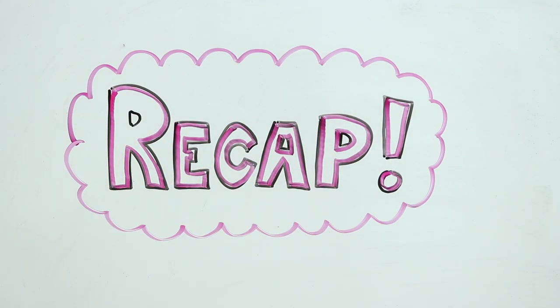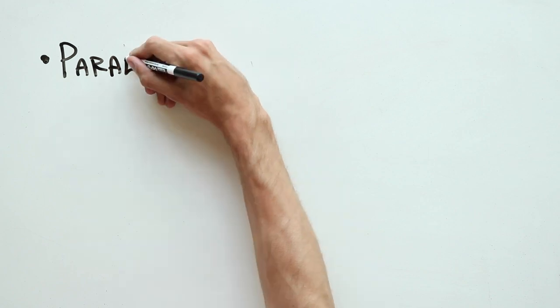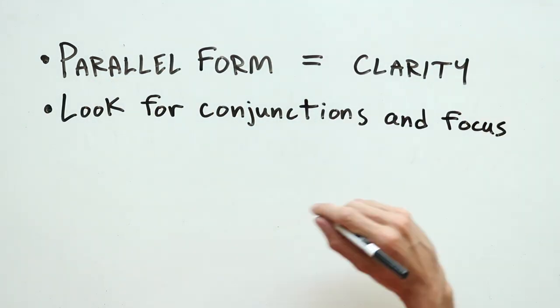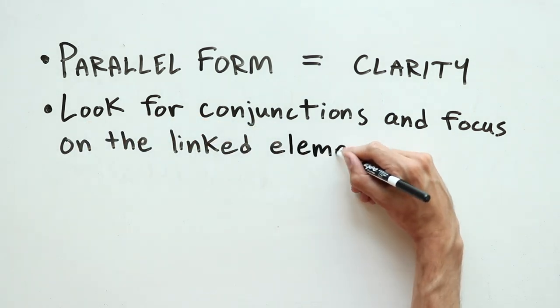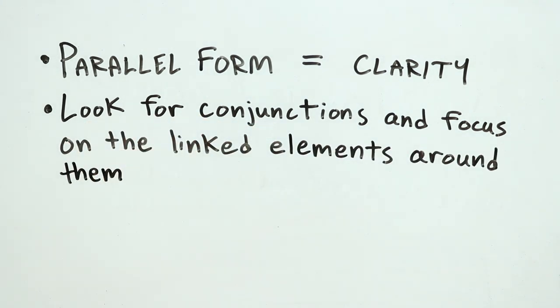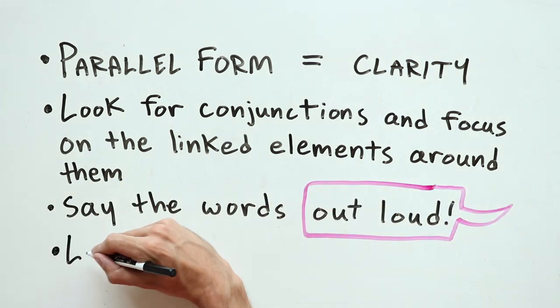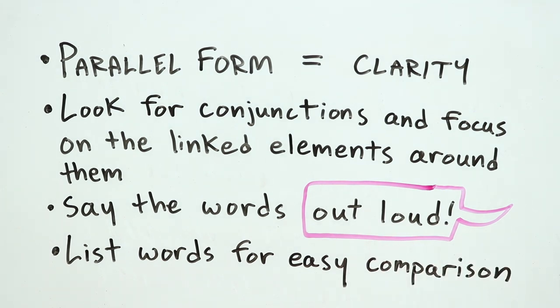To recap, writing in parallel form will help you write more clearly. Checking your writing for errors requires you to first find sentences that include conjunctions, especially coordinating conjunctions, and then focus on the linked elements around them. Say these words out loud and list them in a column. They should sound and look similar. If they don't, make sure you change them so that they do.